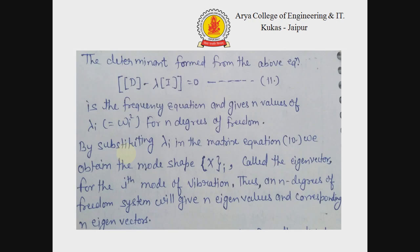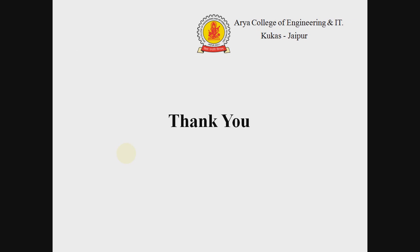The determinant form from the above equation, shown as equation eleven, is the frequency equation and gives n values of λ for n degrees of freedom. By substituting each λᵢ into the matrix equation, we obtain the mode shape called the eigenvector for the ith mode of vibration. Thus, an n degrees of freedom system will give n eigenvalues and corresponding n eigenvectors. Thank you.